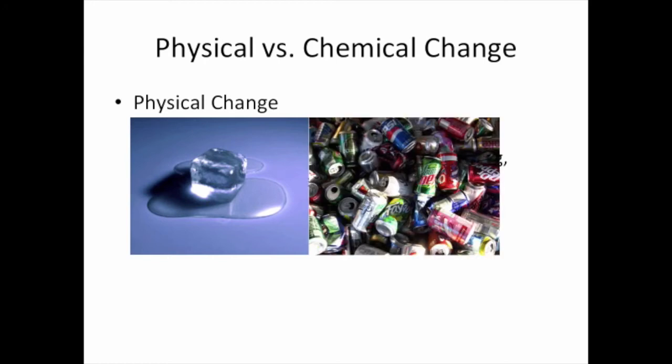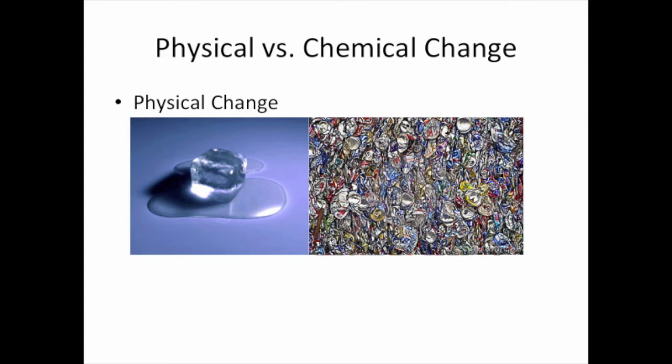A second example where we have these aluminum cans. Here we have aluminum metal, and we're going to crush them. So it's still aluminum metal, and these are still cans, but they're in a different form. This is a physical change. It's not a chemical change.